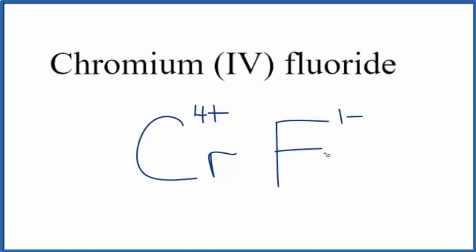When we do that we change the subscript on the fluorine here on this fluoride ion so we'll put a 4 here 4 times 1 minus that's 4 minus that balances out the 4 plus that gives us a net charge of zero so the formula for chromium 4 fluoride is CrF4.